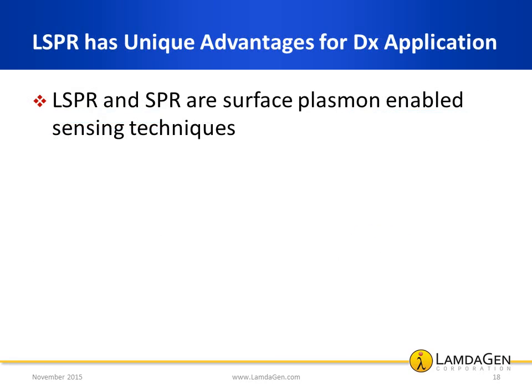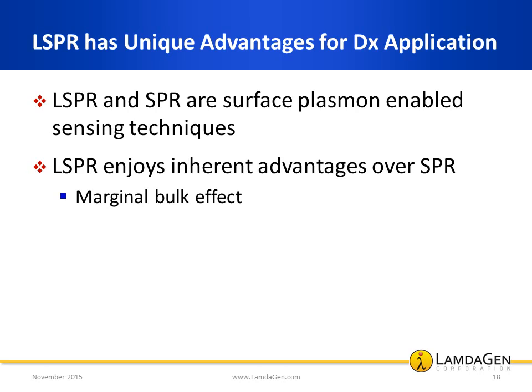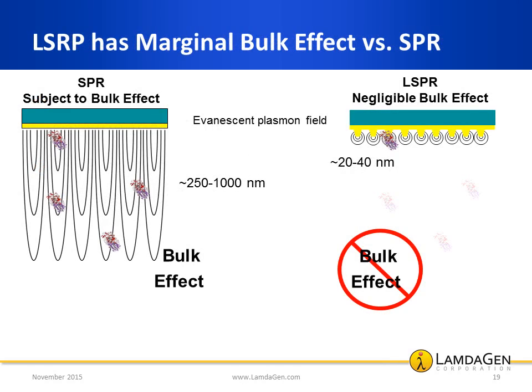In summary, SPR and LSPR are similar sensing technologies enabled by surface plasmons; however, the two technologies differ in several important ways. First, LSPR enjoys a marginal bulk effect due to the small size of the localized plasmon evanescent field. The large evanescent field of SPR is responsible for large nonspecific bulk effect and uncontrollable signal fluctuations, making it generally incompatible with complex matrices. Due to these and other factors, SPR has not been successfully applied in the diagnostic world, in particular for blood-based immunoassays, where detection of low-level biomarkers requires signal amplification.